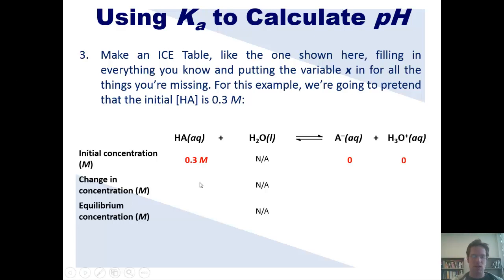So I can write over here on the second row under HA, minus X to indicate the amount of change in concentration. So what will the values under A-minus and H3O-plus be over here? You'll notice that the stoichiometric ratio of HA to A-minus to H3O-plus is 1 to 1 to 1, which means that if I decrease the concentration of HA by X moles, the number of moles of A-minus and H3O-plus that are going to appear are also going to be X.